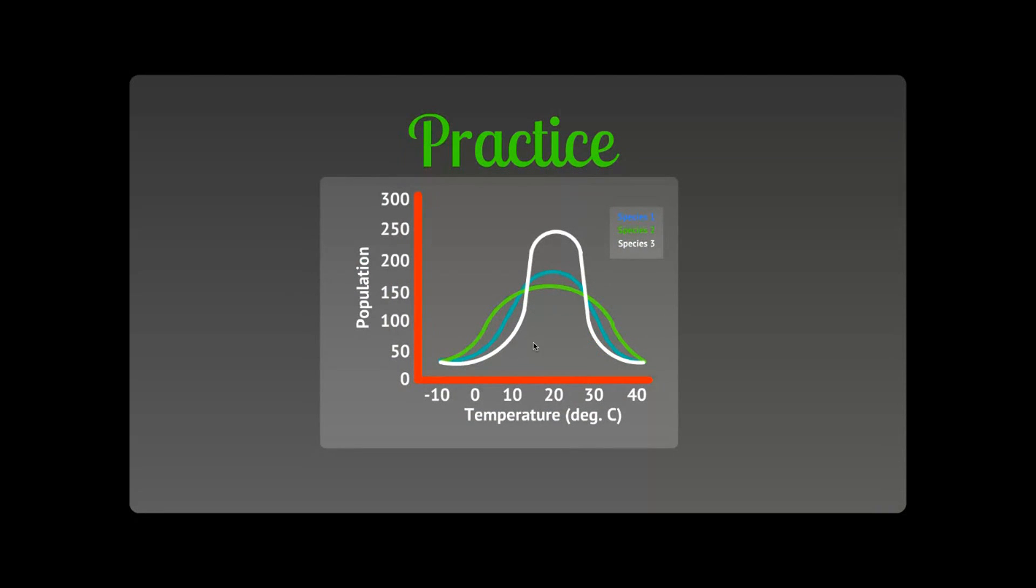So actually, this is a great example here, just this graph, where you can see we've made a tolerance curve tracking the population of an organism over the course of some temperature. And you can see I have three species here, three different species of organisms - species one, species two, species three. Species one in blue, species two in green, species three in white.